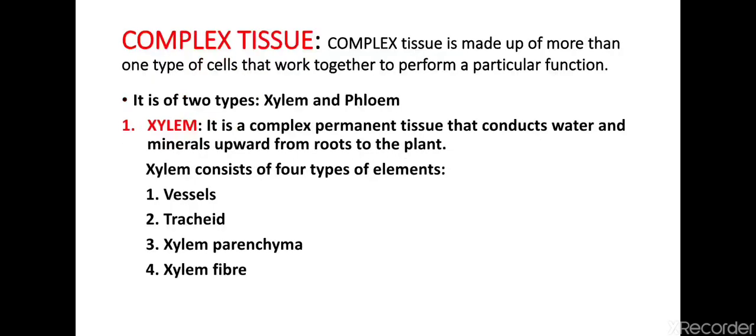The next type of permanent tissue is complex permanent tissue. Complex permanent tissue is made up of more than one type of cells that work together to perform a particular function. It is of two types: xylem and phloem. Xylem is a complex permanent tissue that conducts water and minerals upward from roots to the plant. Xylem consists of four types of elements: vessels, tracheids, xylem parenchyma, and xylem fibers.